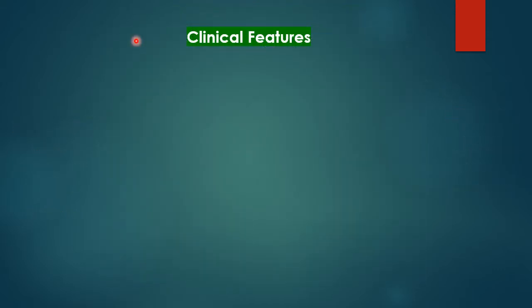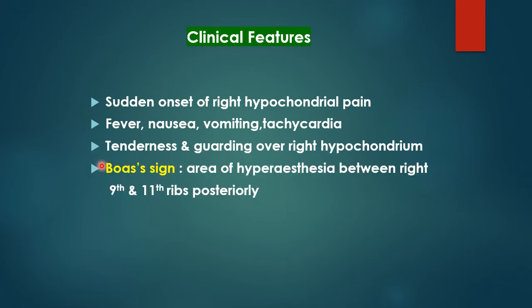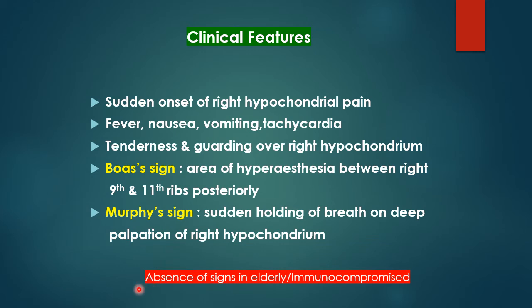Clinical features of acute cholecystitis: sudden onset of right hypochondrial pain associated with fever, nausea, vomiting, and tachycardia. On examination, there is tenderness and guarding over the right hypochondrium. The Boas sign — an area of hyperesthesia between the 9th and 11th ribs posteriorly — may be positive, as is Murphy's sign. Importantly, in elderly and immunosuppressed patients, there may be minimal or no signs, especially pain and fever, even in the presence of acute cholecystitis.